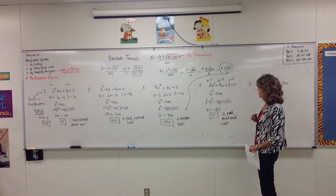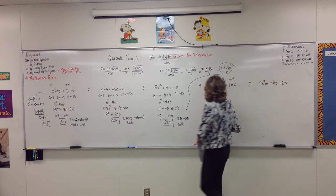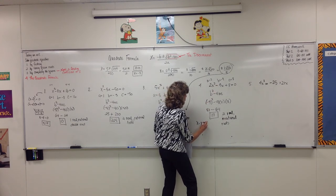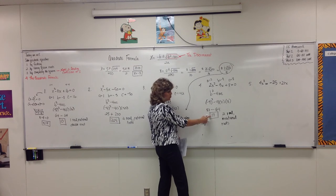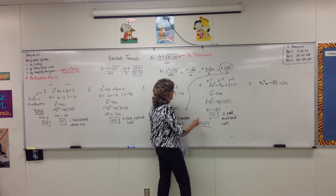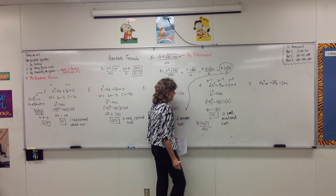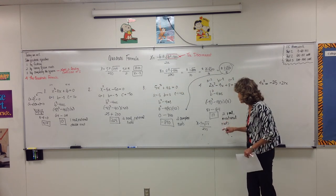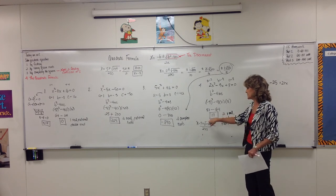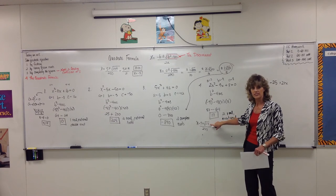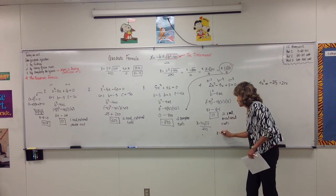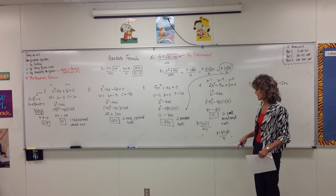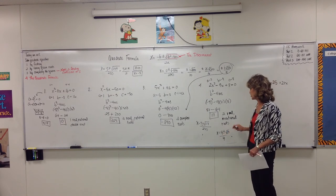Solving Example 4 with the quadratic formula: x equals negative of negative 9, which is positive 9, plus or minus the square root of 17 — which we already calculated as b squared minus 4ac — all over 2 times 2. The square root of 17 cannot be simplified. So the two solutions are 9 plus the square root of 17, all over 4, and 9 minus the square root of 17, all over 4. Real, irrational, two roots.